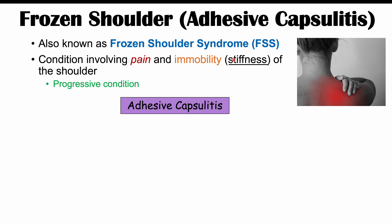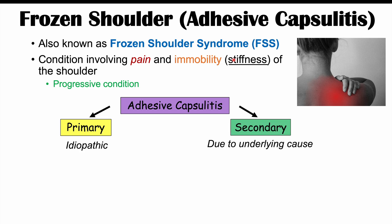Adhesive capsulitis is broken down into two types. Primary adhesive capsulitis is where the underlying cause is not known — meaning it's idiopathic. Secondary adhesive capsulitis is due to some other underlying cause, and we're going to talk about a wide variety of those causes in the next slide.